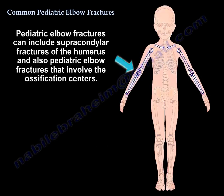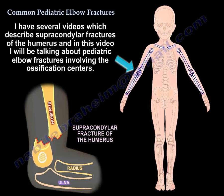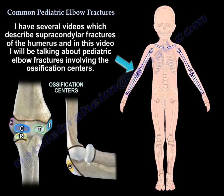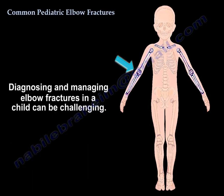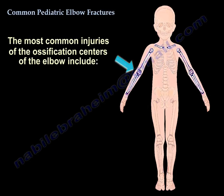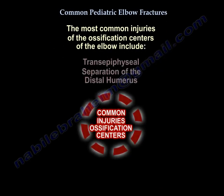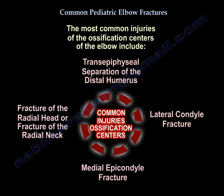Common pediatric elbow fractures can include supracondylar fractures of the humerus, as well as fractures involving the ossification centers. In this video, I'm going to be talking about pediatric elbow fractures involving the ossification centers. The most common injuries include trans-epiphyseal separation of the distal humerus, lateral condyle fracture, medial epicondyle fracture, and fracture of the radial head or radial neck.